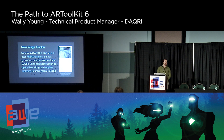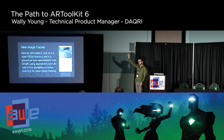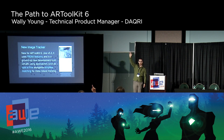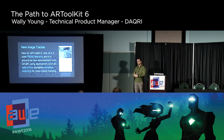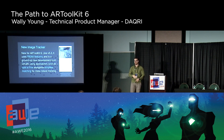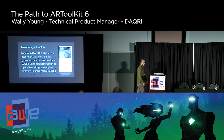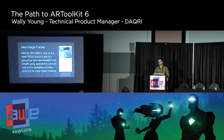Our image training has gotten significantly easier. Who here has used ARToolkit 5 or below? Before, you would take a JPEG, pass it into the command line tool, run through a training process for various distances and EPIs, output a bunch of files, then load those into ARToolkit. In the easiest case with ARToolkit 6, you give it the path to the image, it generates the data on the fly, and it begins tracking. Nothing else to do.